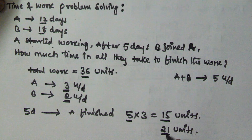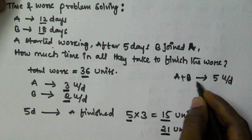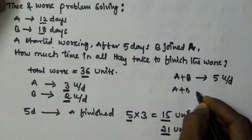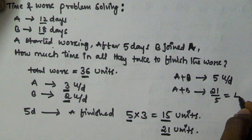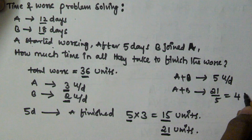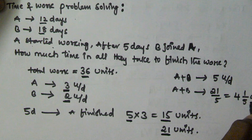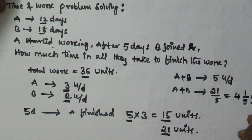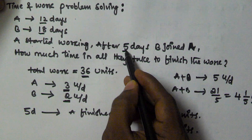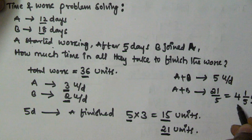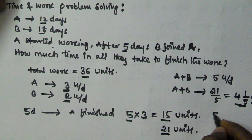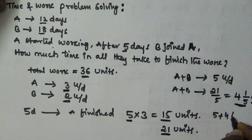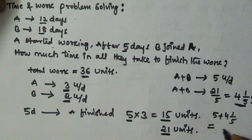The remaining 21 units are finished by A and B together. We take 21 divided by 5, which gives 4⅕ days. So at the start A alone worked 5 days, and after that A and B together worked 4⅕ days. The total number of days is 5 + 4⅕.